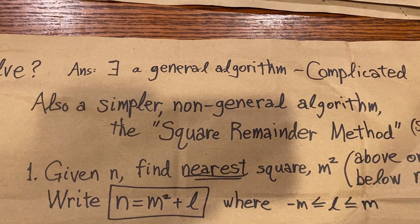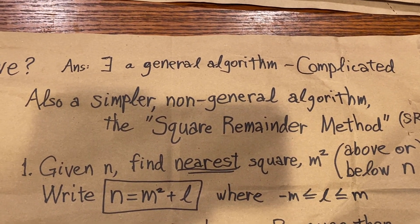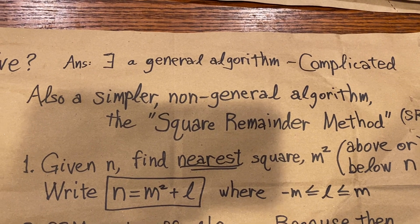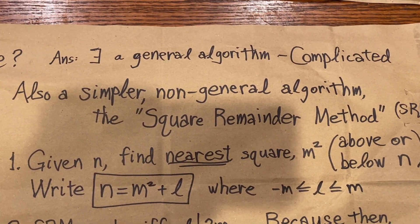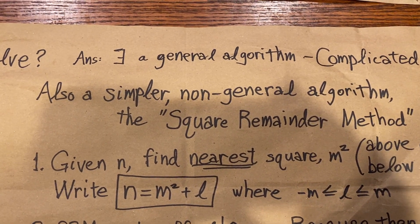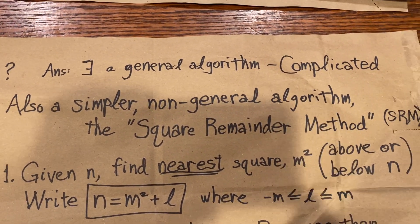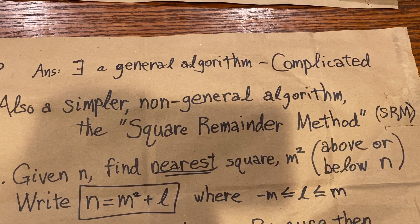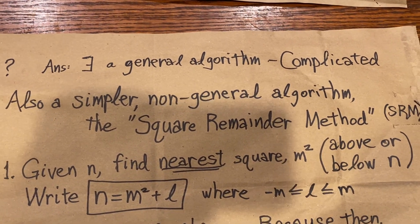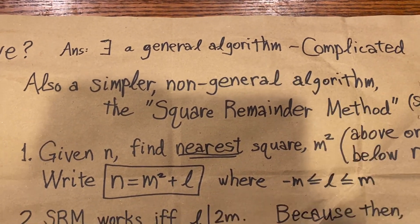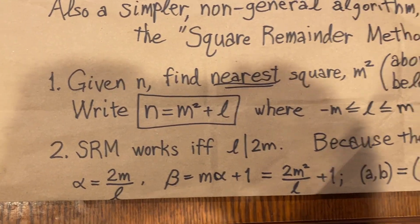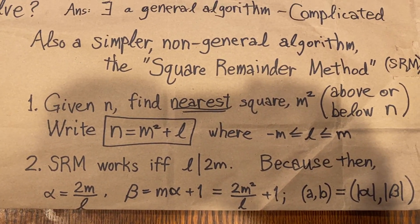Anyway, what I have run into, several decades ago, I've been working off and on on this problem, studying it off and on for several decades. Long ago, I found a simpler, non-general algorithm. It'll work for some n's and not work for others. I call it the square remainder method. So how do we do that? Given n, find the nearest square, m squared.